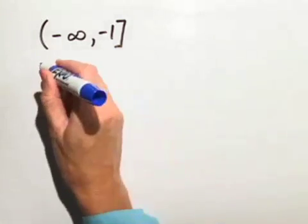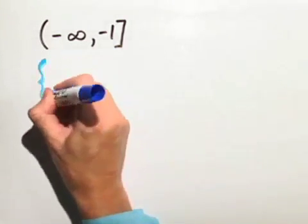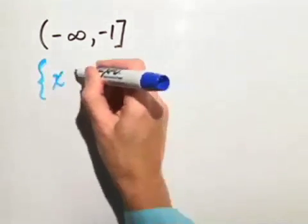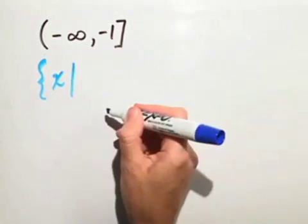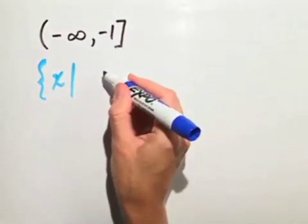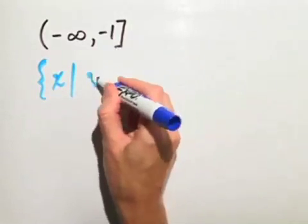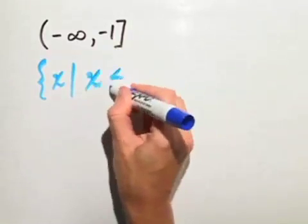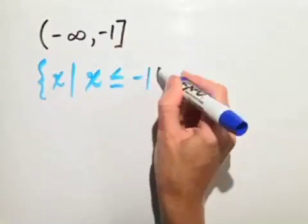So in order to write it in set builder notation, we write the set of all x such that we want numbers to the left of negative 1 and including negative 1. So we simply say x is less than or equal to negative 1.